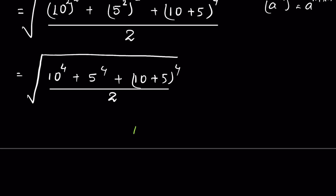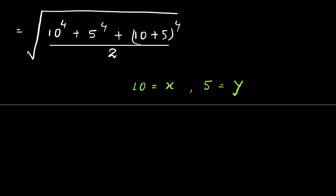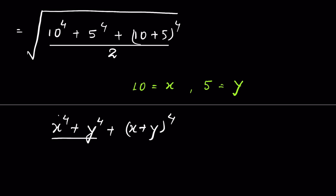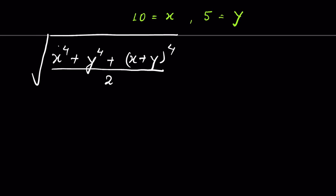Now let's substitute: let x equal 10 and y equal 5. Then we have the square root of (x to the power 4 plus y to the power 4 plus (x plus y) whole to the power 4, upon 2).